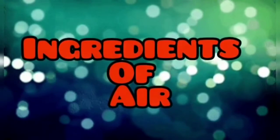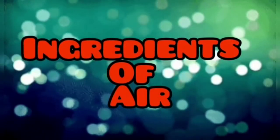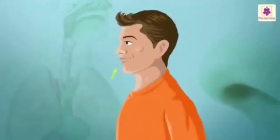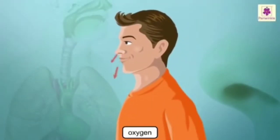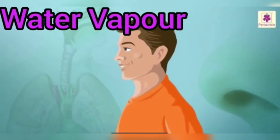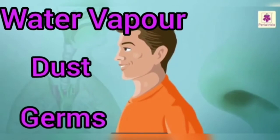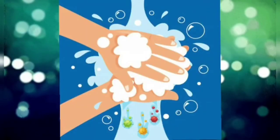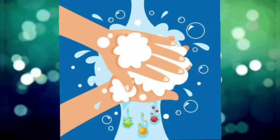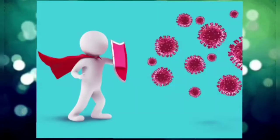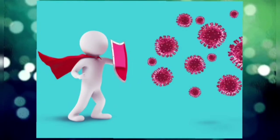Next are the ingredients or components of air. Air is a mixture of gases. It contains gases like oxygen, which we breathe in, and carbon dioxide, which we breathe out. It also contains water vapor, dust, and germs. Children, can you tell me why we should wash our hands before eating even if we have not touched anything dirty? Yes, because air contains dust and germs.